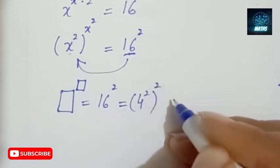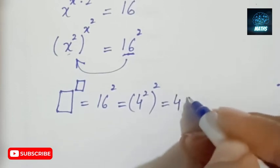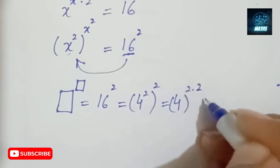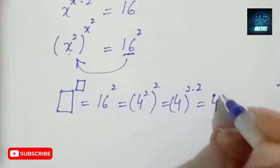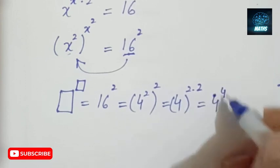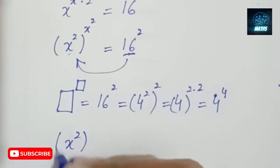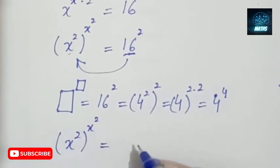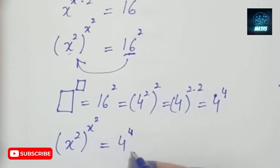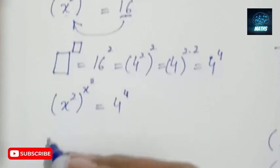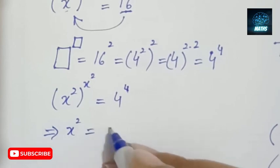So I can write 16 squared as 4 squared to the power 2, which gives 4 to the power 4. So I'm replacing x to the power 2, to the power x to the power 2, which equals 4 to the power 4. From here I deduce that x to the power 2 equals 4.